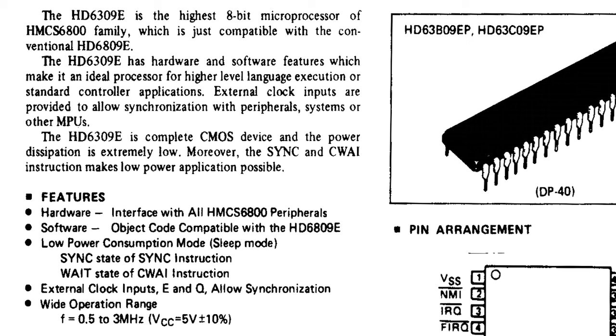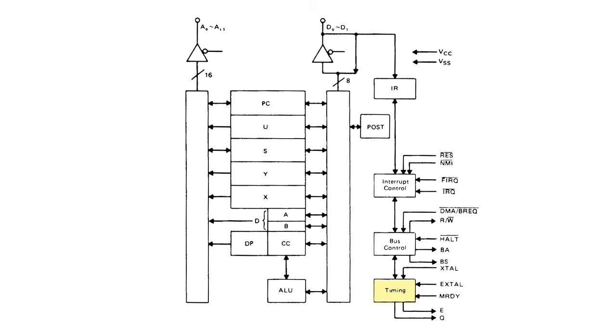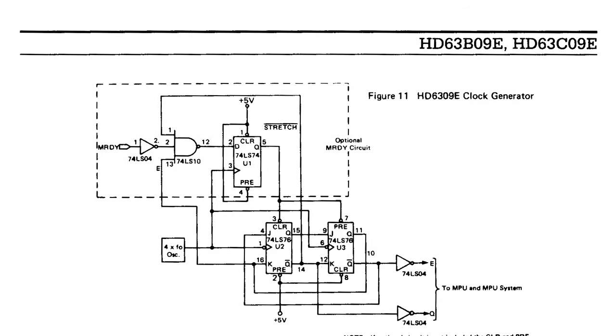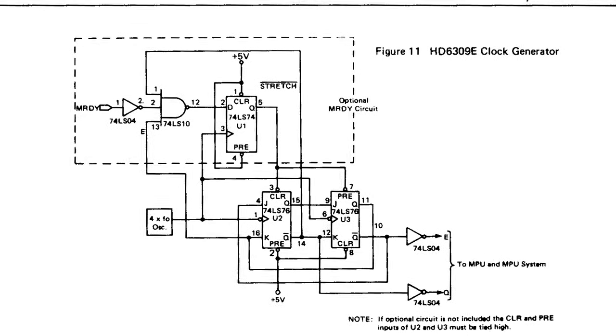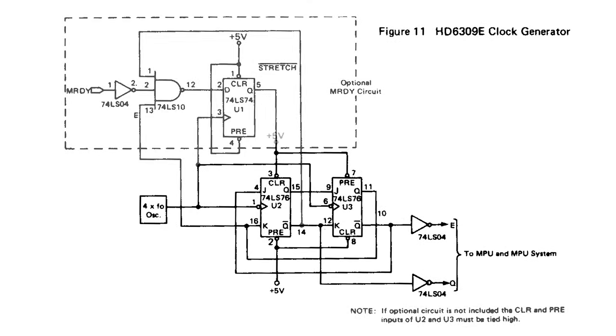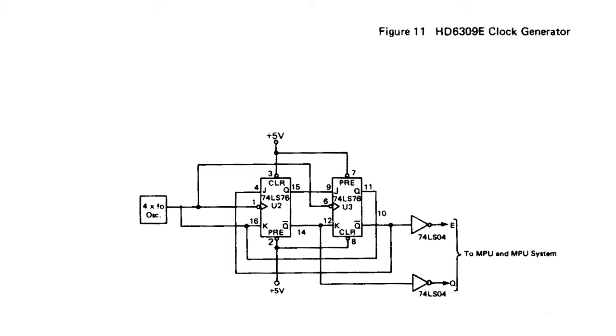However, the most significant aspect is the method of generating clock signals. With the non-E version, the signals are generated internally, while the enhanced version, they are generated externally. Since we're using the enhanced 6309E, we'll design the clock circuit based on its datasheet with a few modifications. For now, we'll skip the optional clock stretching circuit.